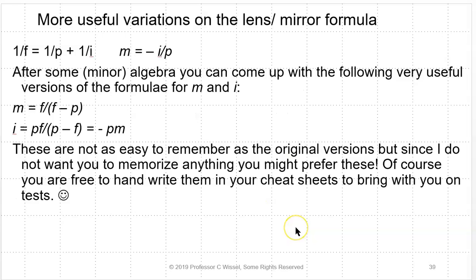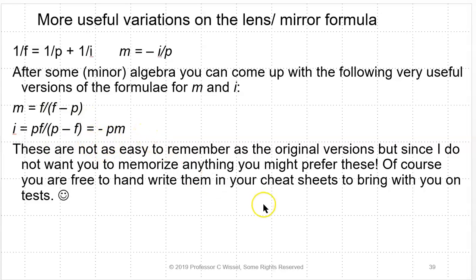There are some useful variations on the lens/mirror formula. From the original equation, with some algebra: M equals F divided by the quantity (F minus P); I equals PF divided by the quantity (P minus F), and also equals P times M. These are not easy to remember, so feel free to write them on your cheat sheet.